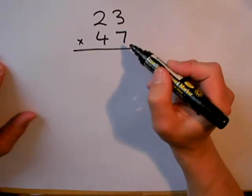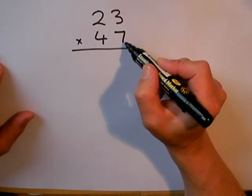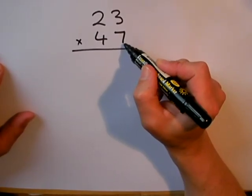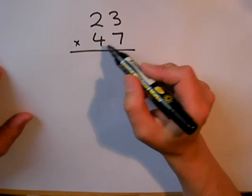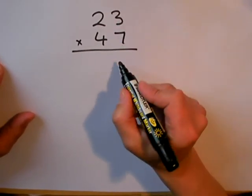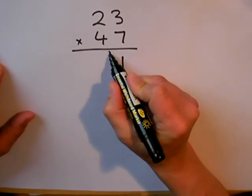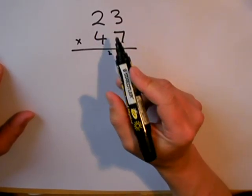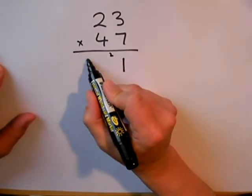Now, in order to do this, I'm going to start by multiplying 23 by 7, and then I'm going to multiply 23 by 40. Here we go. 7 threes are 21. One down, 2 to carry. 7 twos are 14, plus the 2 to carry gives me 16.